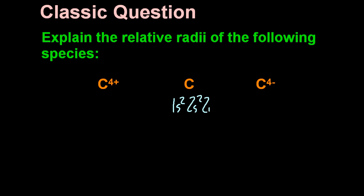This is their classic question. Explain the relative radii of the following species. Well, let's start off with the carbon atom.